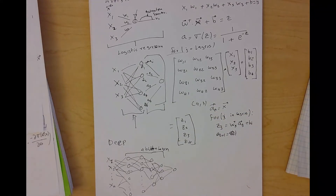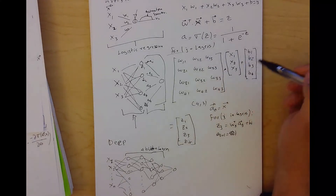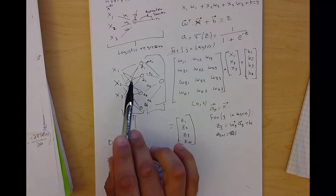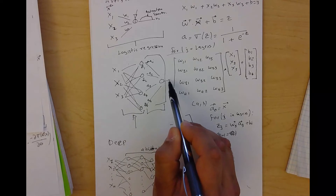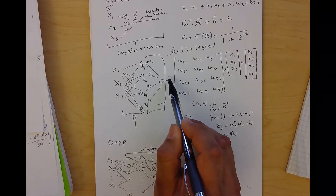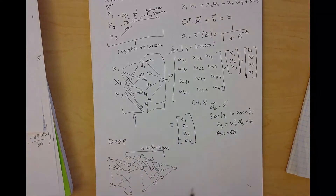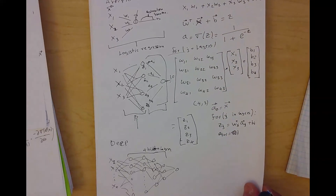As you have noticed, the values of w and b are the ones that we have to optimize in order to get the output that we want — maybe one, maybe zero — depending on what we are classifying.